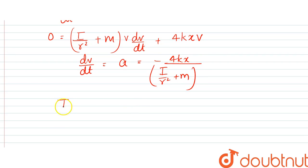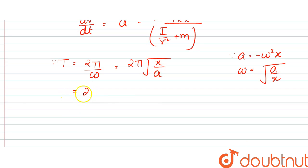So the time period, since time period is equal to 2 pi by omega, and since a is equal to minus omega square x, omega can be written as root of a by x. So this would be 2 pi root of x by a, so we can write 2 pi root of (I by r square plus m) whole divided by 4k. That would be the time period.